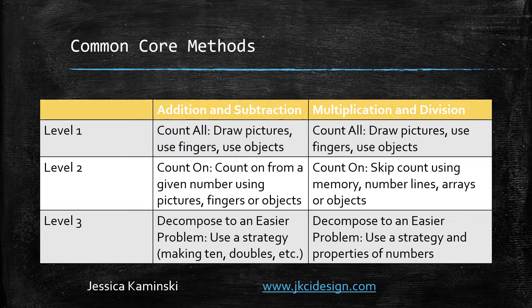Common Core goes a step further and identifies three levels of students' understanding of their math facts and strategies. They're similar for addition and subtraction and multiplication and division. Level one is the same as phase one: the student who counts every single thing starting from one every single time. A lot of times when we start talking about math facts, this is the area that makes people really nervous because they worry kids are going to stay here forever — and they can, if we don't help them move forward. But we can do that.